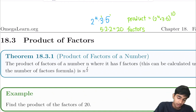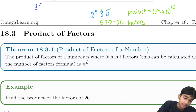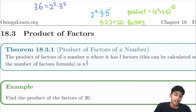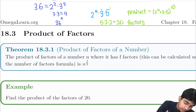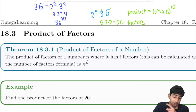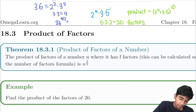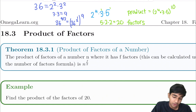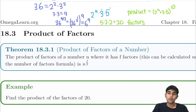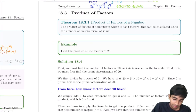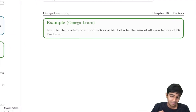Let's take another example: find the product of factors of 36, where 36 = 2 squared times 3 squared. 36 has 3 times 3 equals 9 factors, so the product is 36 to the power of 9/2. Using the exponent rule, this equals (36 to the 1/2) to the 9th power, which is 6 to the 9th power.